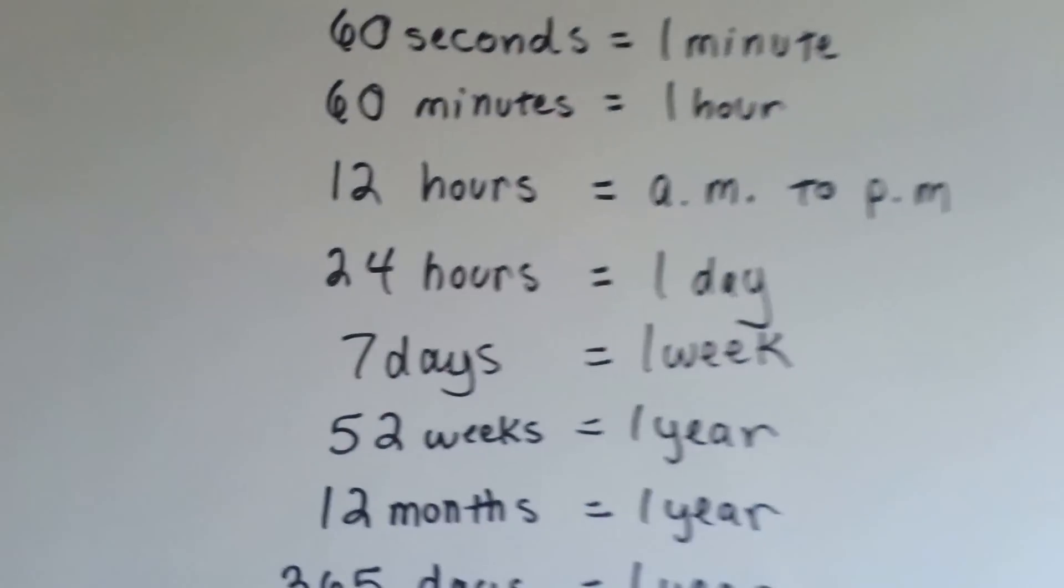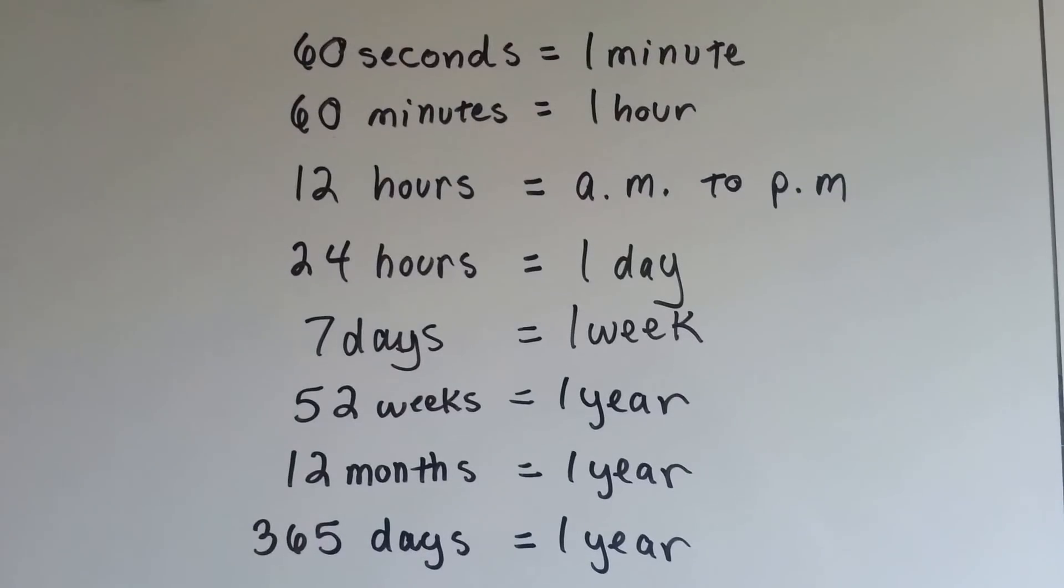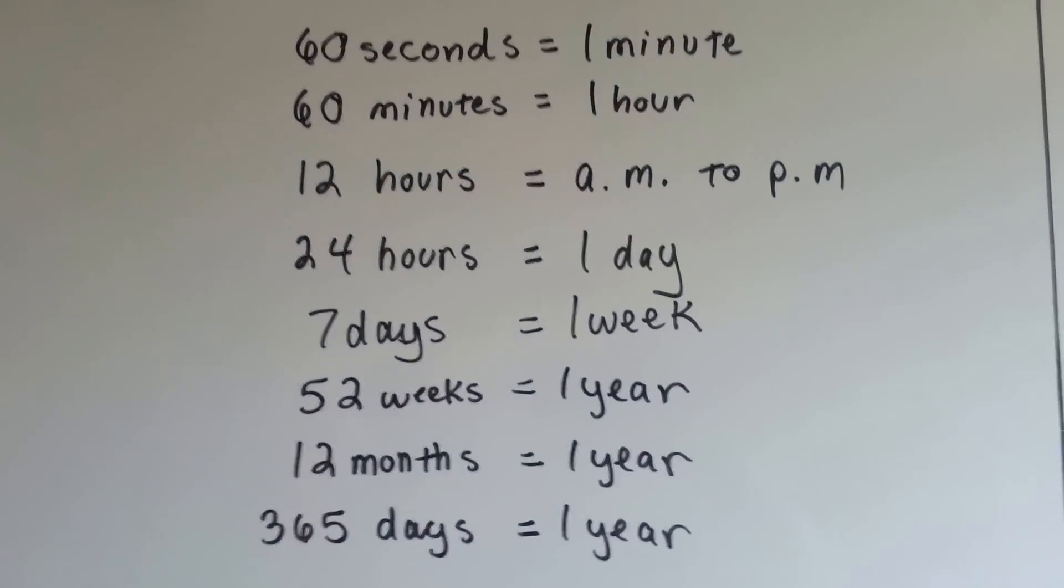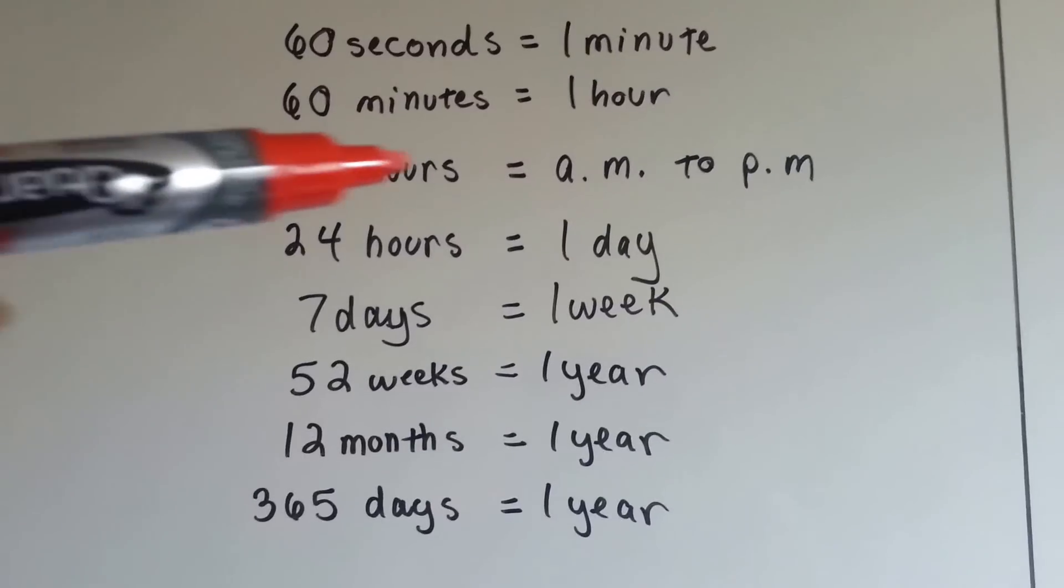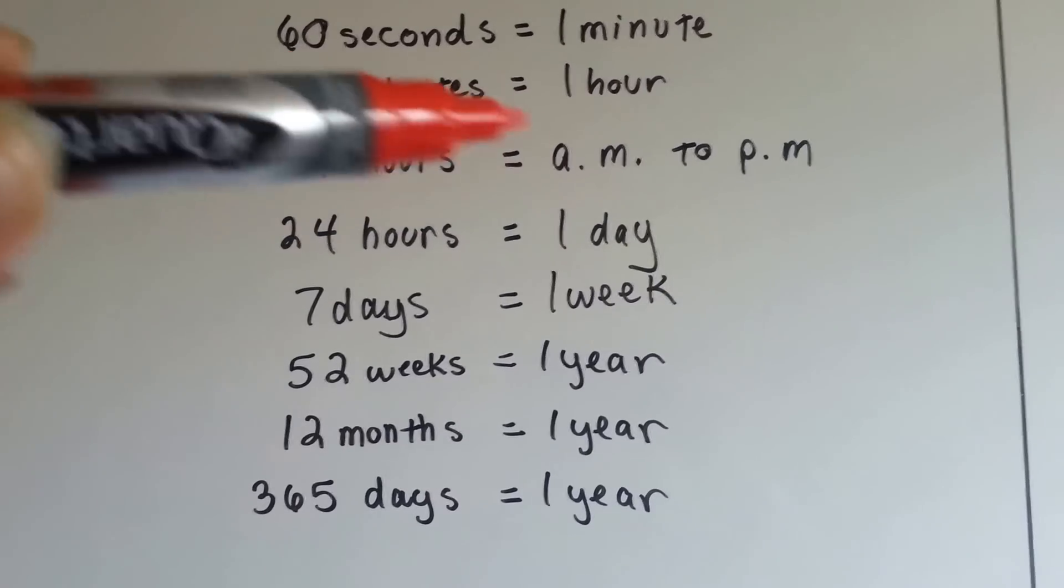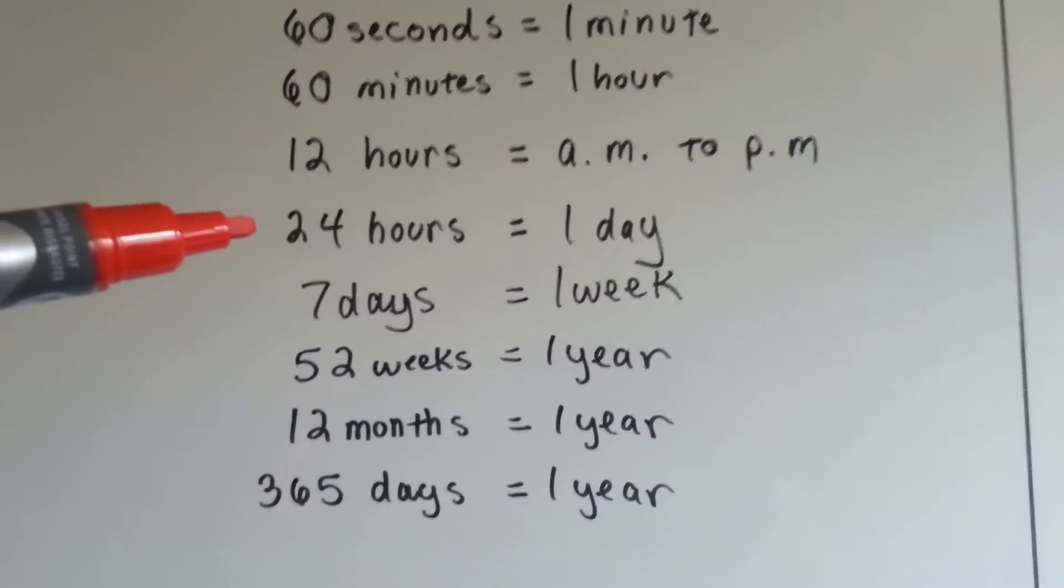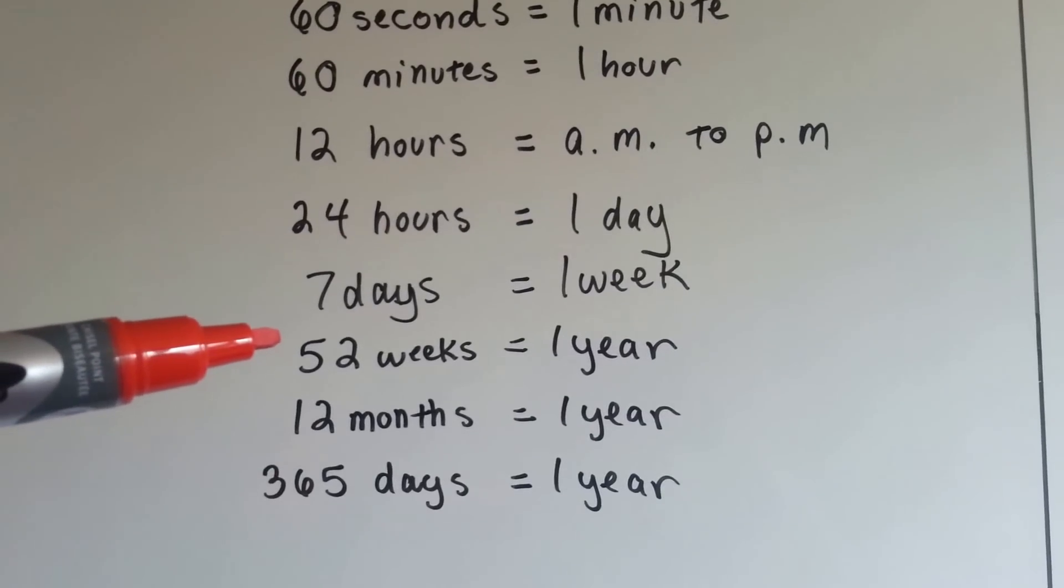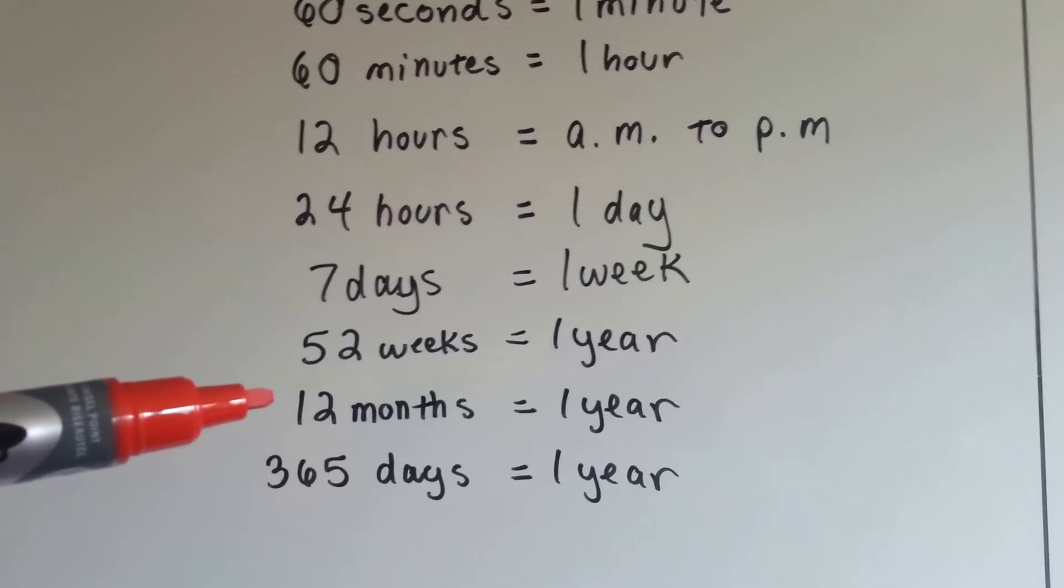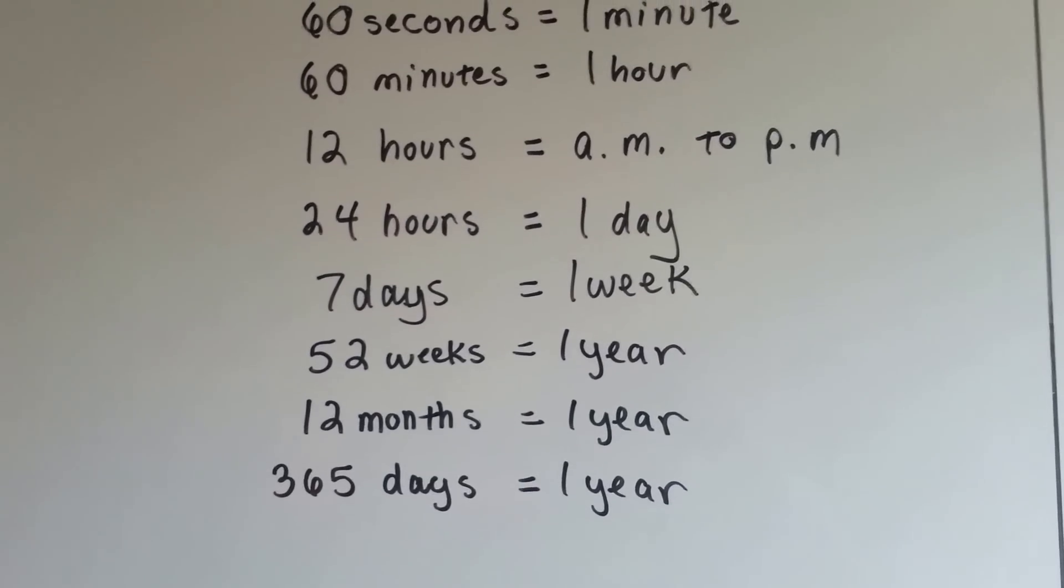By now you should know your measures of units of time: 60 seconds is a minute, 60 minutes is an hour, 12 hours will change you from a.m. to p.m., which is morning to evening, 24 hours is one day, 7 days is a week, 52 weeks is one year, 12 months is a year, and 365 days is a year.